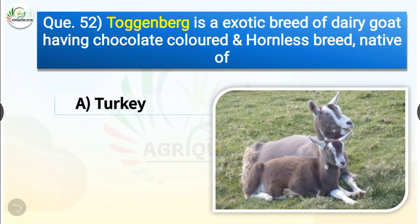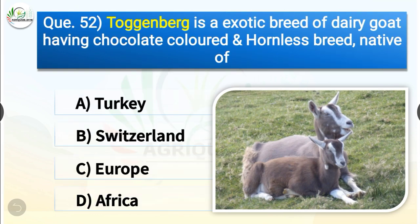Question number 52. Toggenburg is an exotic breed of dairy goat having a chocolate-colored and hornless body, which is native of dash. The options are Turkey, Switzerland, Europe or Africa. The correct answer is option B, Switzerland. So Toggenburg is an exotic breed of dairy goat having chocolate coloring, hornless, and native of Switzerland.